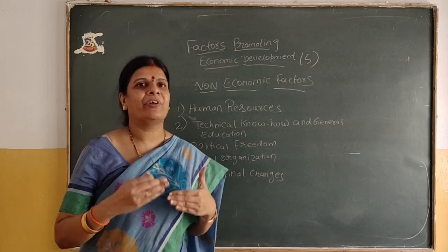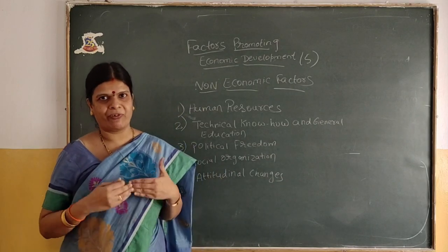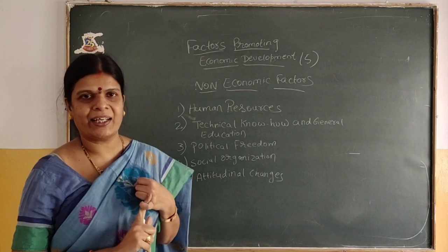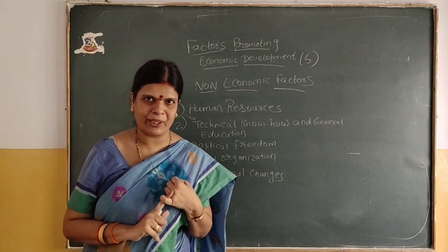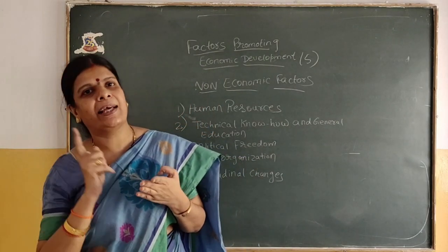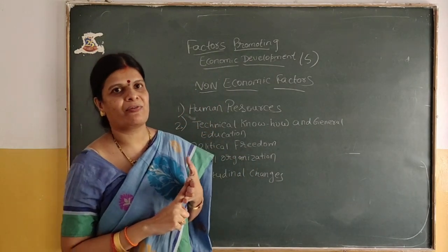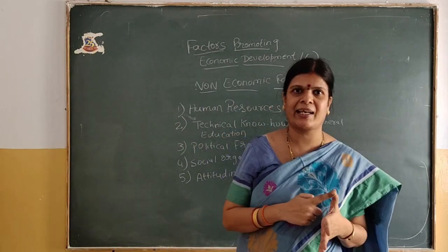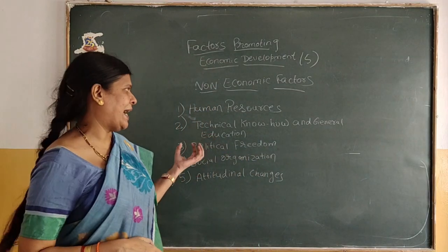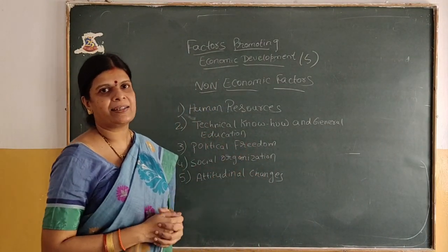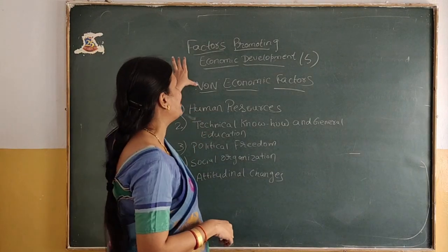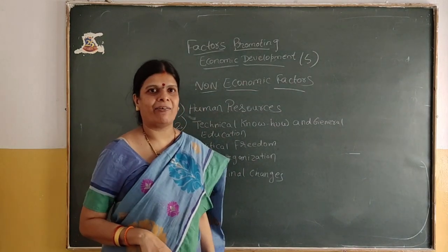With this, we have finished Unit 1. I have covered all the topics in Unit 1: economic growth and economic development differences, objectives of economic development, indicators of economic development, factors hindering economic development, characteristics of developed countries, characteristics of developing economies with special reference to India, and factors promoting economic development. In this lesson, students, you will get three ten-mark questions that are very important.